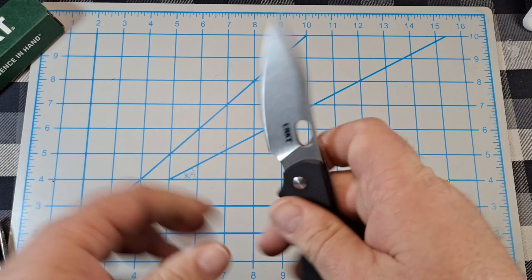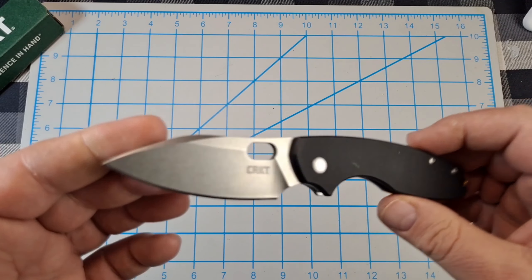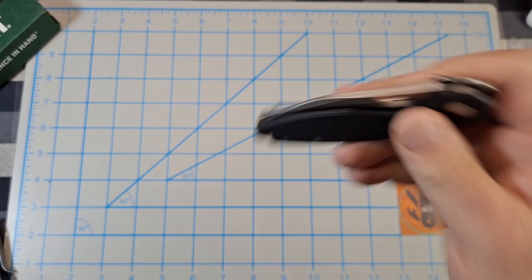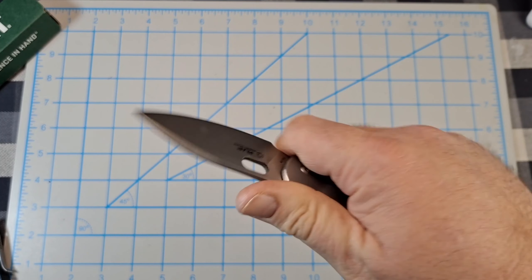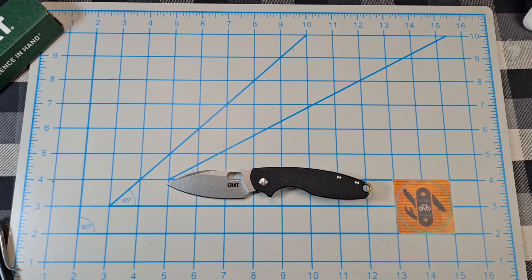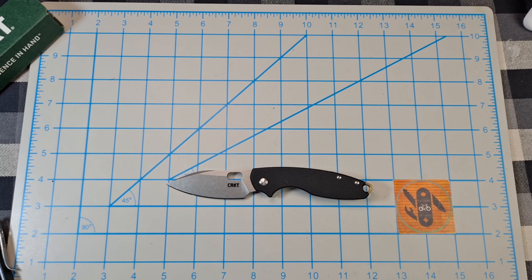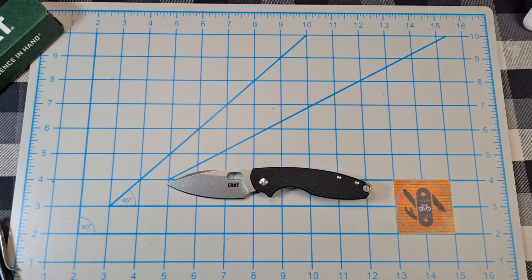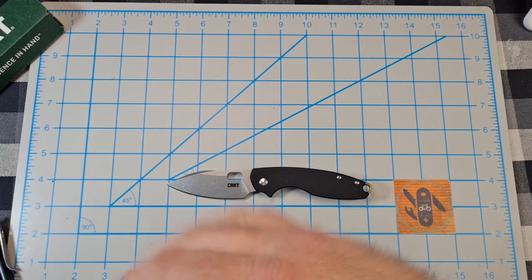But I guess that's it. $51.95 for the D2, $38.95 for the 8CR. Jesper Voxnaes design - can't beat it. It's nice. He usually has great ergos, cool designs. And I guess that's it. As usual, if you like the video, hit the like button, leave a comment down below, subscribe to the channel if you haven't, and until the next video, bye.